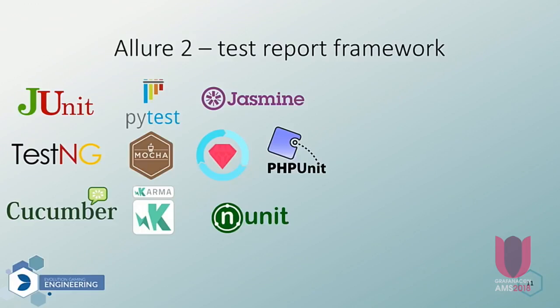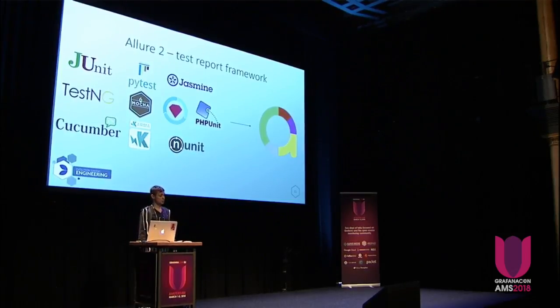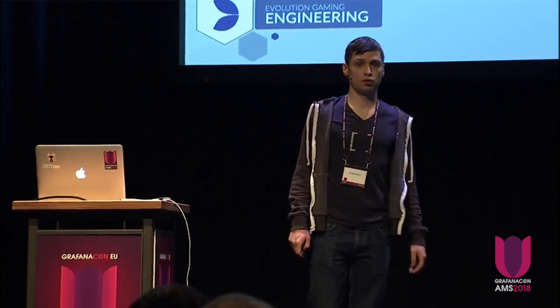But in the real world, there are many more test execution frameworks in different languages, like PyTest, PHPUnit, or Cucumber. For that, there is a very good open source tool called Allure. The second release was half a year ago, and recently they added export to InfluxDB. So basically you can collect information from all different tests in one common way, and you don't need to rely on any specific continuous integration system like Jenkins. It works the same way for all these test execution frameworks on any CI server.